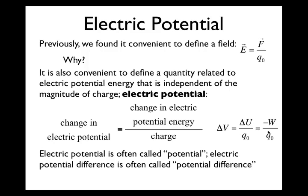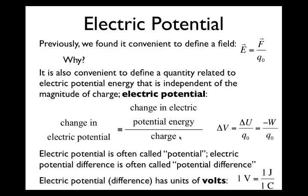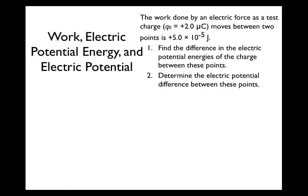Electric potential is often just called 'potential,' and electric potential difference is often called 'potential difference,' particularly in circuits. In circuits, rather than discussing the exact energy between two locations, you can discuss the change in electric potential, which is independent of how much charge you're pushing through the circuit. Electric potential has units of volts, and one volt equals one joule per one coulomb.